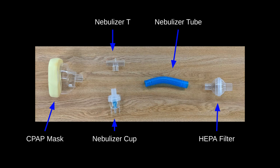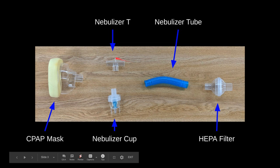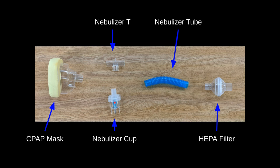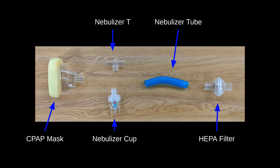Take a few moments to review this photograph. Using existing equipment that you have familiarity with and access to on the ALS transport units, you'll find a CPAP mask. The general normal setup for a nebulizer includes the nebulizer T, the nebulizer cup, and the nebulizer tube — these are just in a standard setup. These are not the inline nebulizer. And last but not least, the HEPA filter that comes in the CPAP circuit.